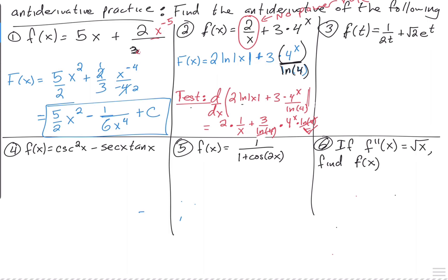So ln of a constant is just a constant — it's not 1 over 4. Yes, ln of a constant is a constant.